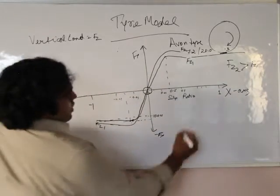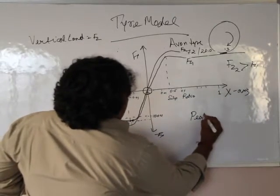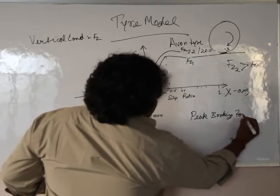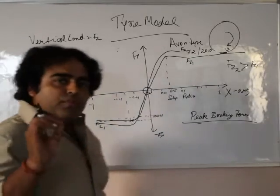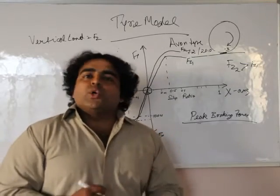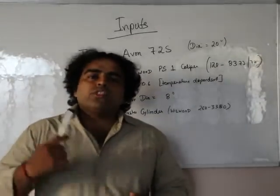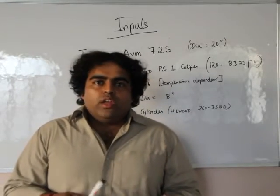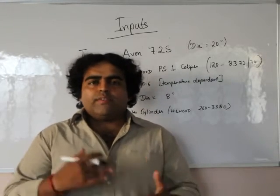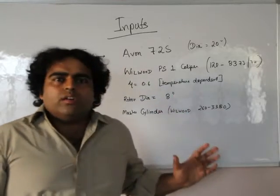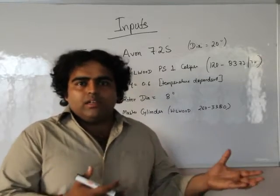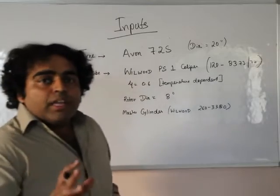So this is about the tyre model. Now that the tyre model is clear, and we know when our brakes are going to lock, we can move on to the brakes and find out whether we are able to generate that much braking force or not. Let's call this point the peak braking force. Your brake has to be sufficient enough to generate the peak braking force of your tyre — then only your wheels are going to lock.